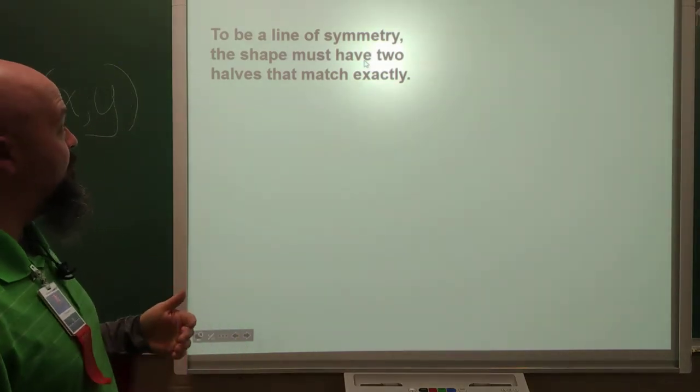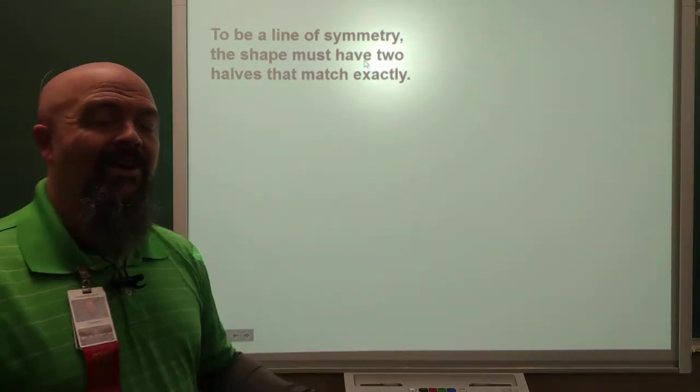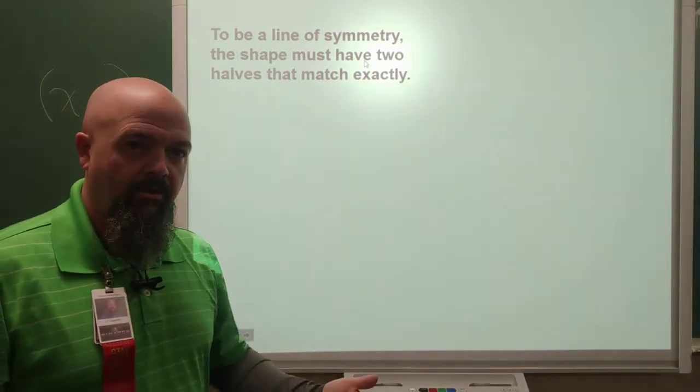Exactly similar. Similar meaning same size, same shape. And that's what the line symmetry gives us. Alright, so, to be a line of symmetry, the shape must have two halves that match exactly. Think about that when I talk about the example here.